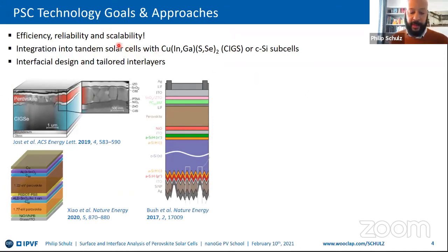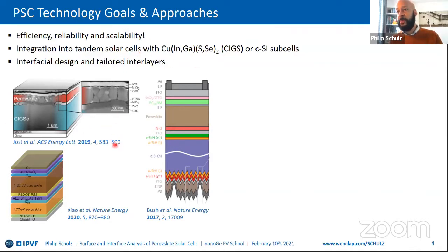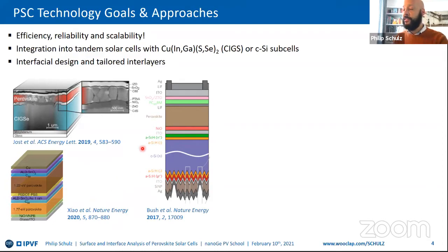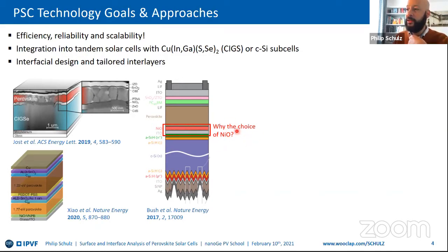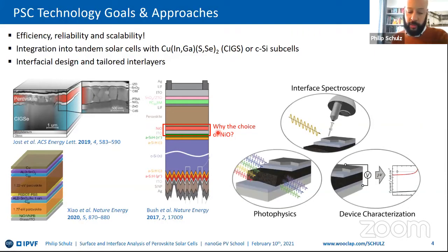If we think about interfaces in perovskite solar cells, there are always the technological goals of efficiency, reliability, and scalability. The big promise of perovskite photovoltaics is integration into tandem solar cells — for instance with CIGS, with silicon sub-cells, or even perovskite-perovskite tandems. Critical to this is interfacial design and tailored interlayers. There are a lot of different interfaces in these layer stacks. One question I always ask is: why do we need nickel oxide here? Couldn't we use any other oxide?